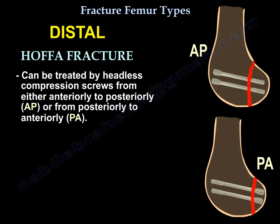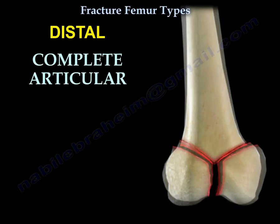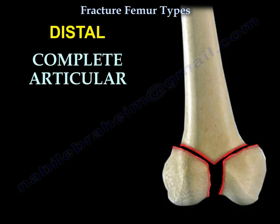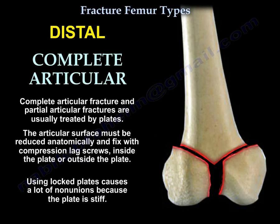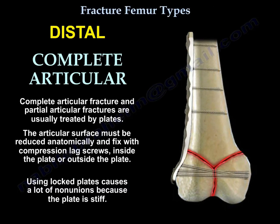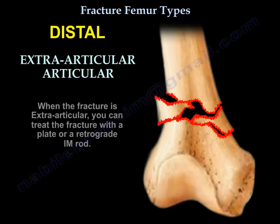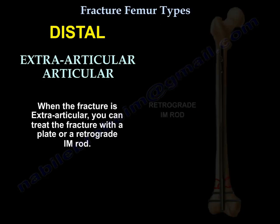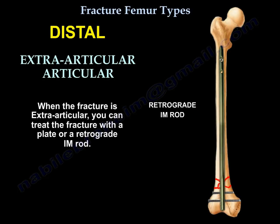The Hoffa fracture can be treated by a headless compression screw placed anteriorly to posteriorly or posteriorly to anteriorly. Complete articular and partial articular fractures are usually treated by plates. The articular surface must be reduced anatomically and fixed with compression lag screws inside or outside the plate. Using long plates causes many non-unions because the plate is too stiff. Extra-articular fractures can be treated with a plate or retrograde intramedullary rod.